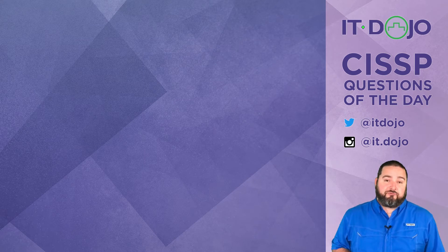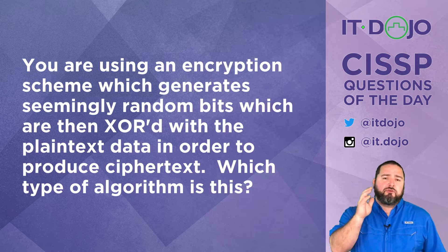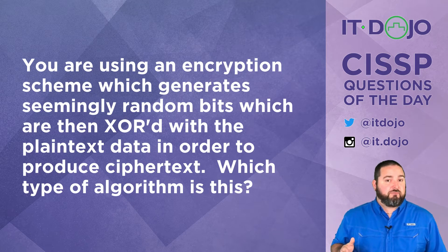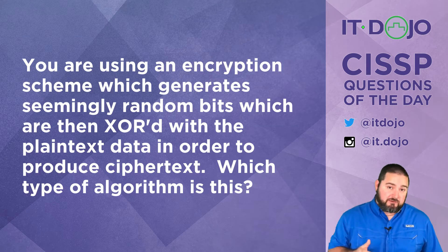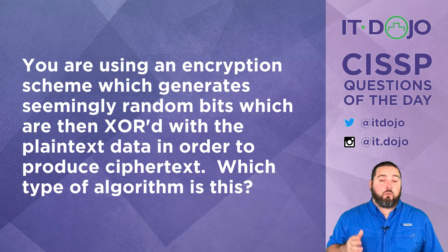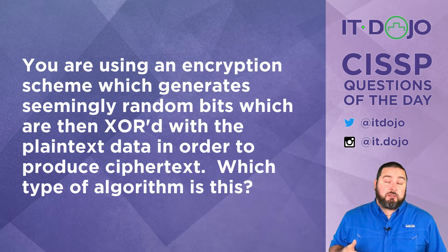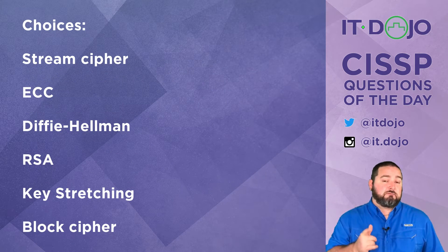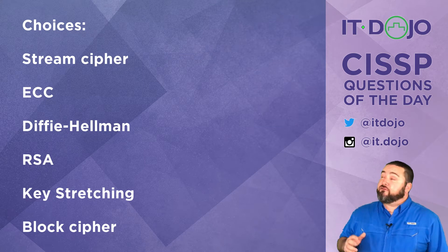Question number one coming at you today from the world of cryptography. You are using an algorithm which generates a seemingly random stream of bits that are then exclusive OR'd with your plain text data in order to produce ciphertext. The question is: what type of cipher or algorithm are you using? Go ahead and ponder the answer choices, and when you're ready click play again.